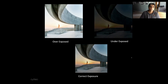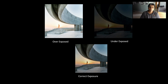Look at these three images. The first image is very bright, the second image is too dark, and the third image is perfect. In photographic terms, we call the first image overexposed, the second image underexposed, and the third image correctly or balanced exposed. What we need to capture is a correctly exposed image.